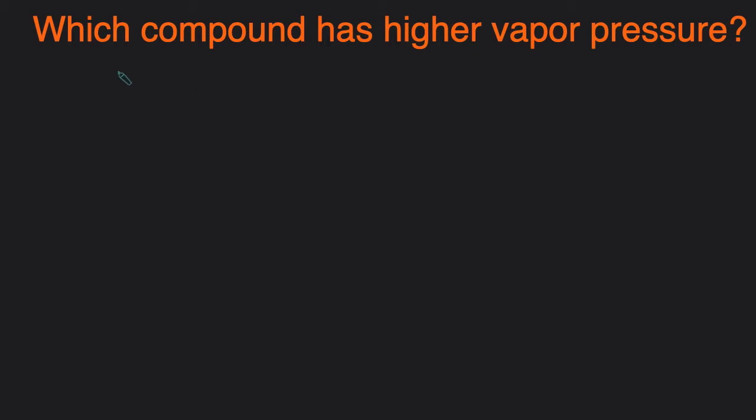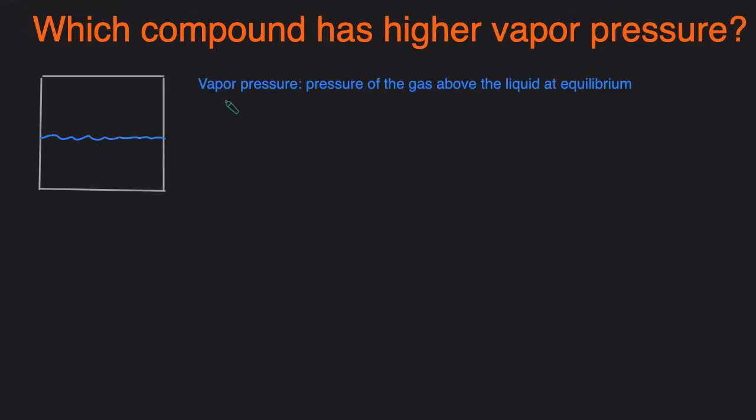Hey guys, it's Michael from Koch Chemistry. In this video we'll be talking about how to determine which compound has a higher vapor pressure. Let's start off with the definition of vapor pressure. Vapor pressure is defined as the pressure of the gas above the liquid at equilibrium.